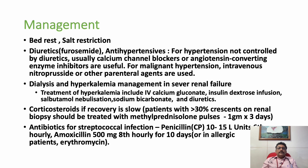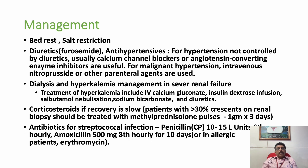Diuretics can be given in patients with pulmonary edema or high BP. If BP is not controlled with diuretics, we can use calcium channel blockers or ACE inhibitors — but most doctors prefer calcium channel blockers initially, because these patients can have high creatinine, and it is better to avoid ACE inhibitors or ARBs during acute renal failure, as they can sometimes aggravate the problem.